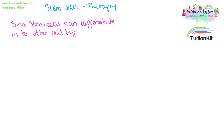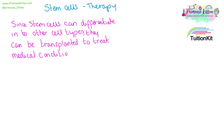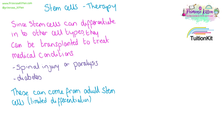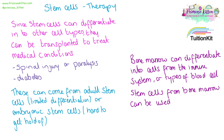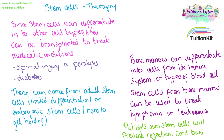Since stem cells can differentiate into other cell types, they can be transplanted to treat medical conditions such as spinal cord injury, paralysis, or diabetes. These stem cells can come from adult stem cells, which have a limited differentiation ability, or they can come from embryonic stem cells, which are harder to get hold of. For example, bone marrow from another adult can differentiate into cells from the immune system or types of blood cell, meaning that stem cells from bone marrow can be used to treat lymphoma or leukemia. Patients' own stem cells can be used, which will prevent rejection, and sometimes this will involve cord banking of the umbilical cord at birth.